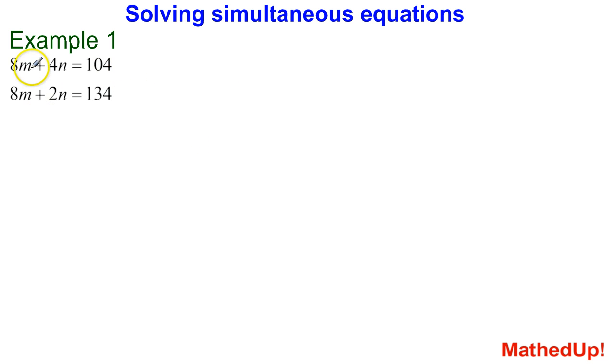So over here we've got two equations: 8m plus 4n is equal to 104, and 8m plus 2n is equal to 134. What we're looking for is a value of m and a value of n that works in both equations.